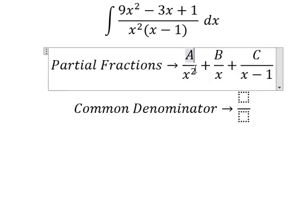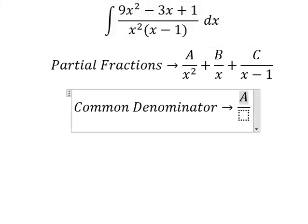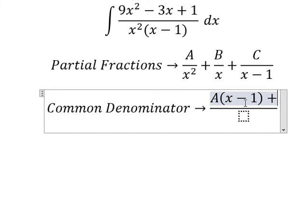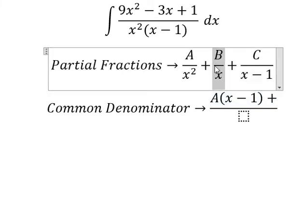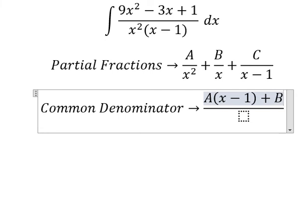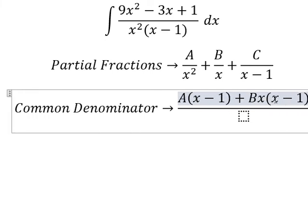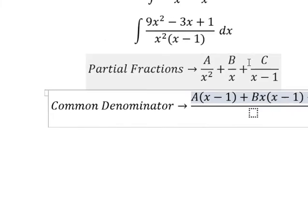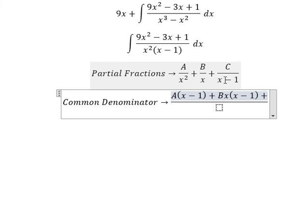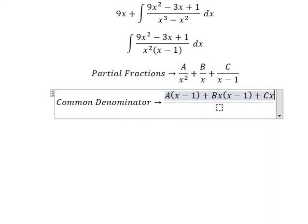So this one is missing x minus 1, so capital A over x minus 1. About this one, it is missing x and x minus 1, so capital B multiplied by x and x minus 1. About C, it is missing x², so capital C multiplied by x².